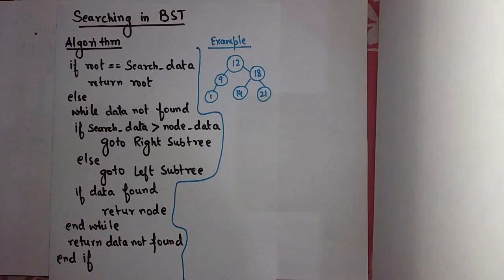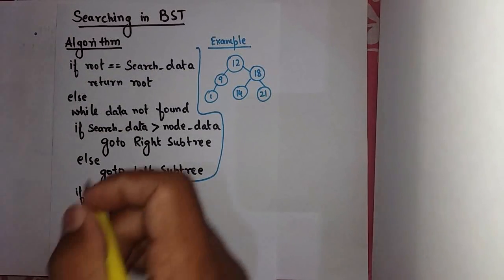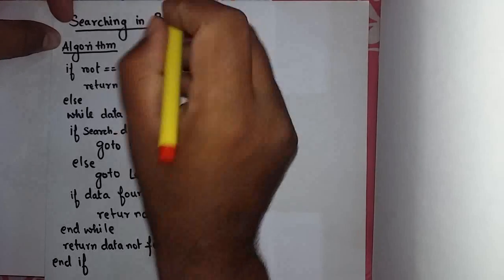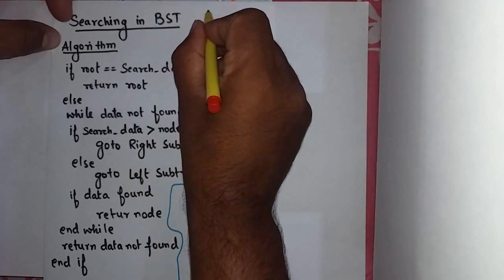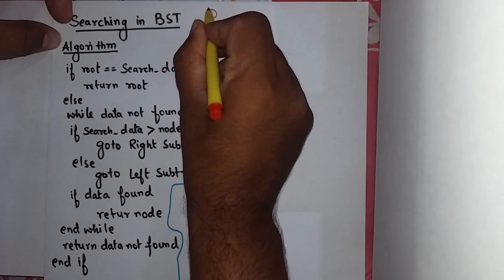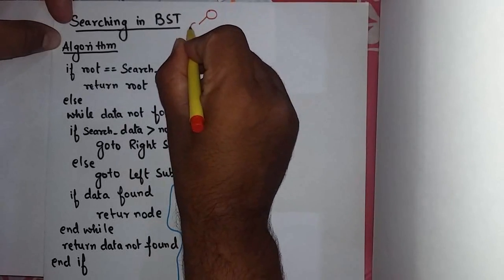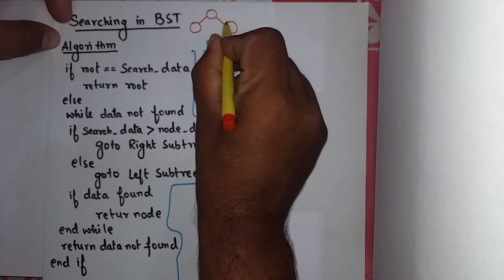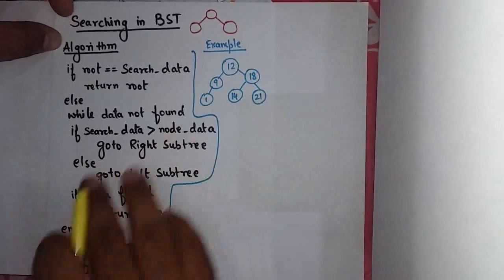Hello students, welcome to the class of binary search tree. In the previous class we have seen a property of binary search tree which says the value of node should be greater than the value at left side and smaller than the value on the right subtree.